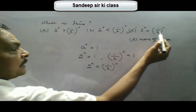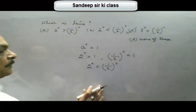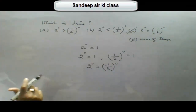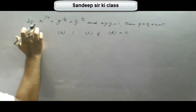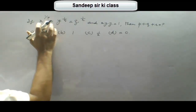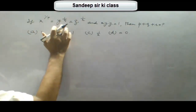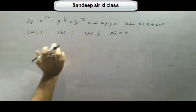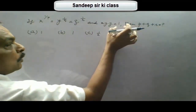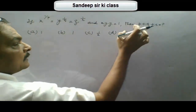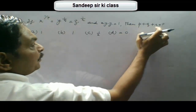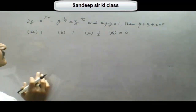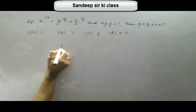So option C is correct: 2 raised to the power 0 is equal to 1 upon 2 raised to the power 0. Now for the next problem: if x to the power 1 upon p equals y to the power 1 upon q equals z to the power 1 upon r equals k.